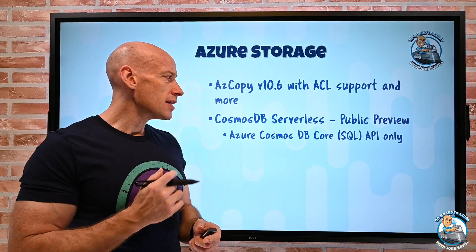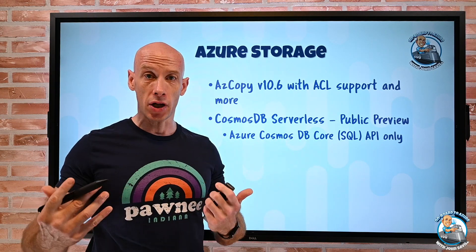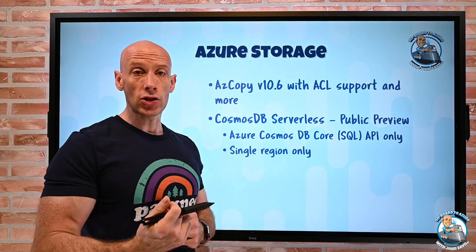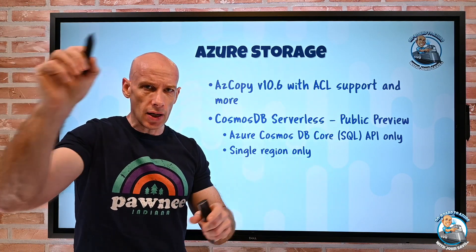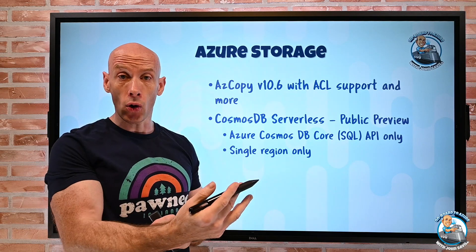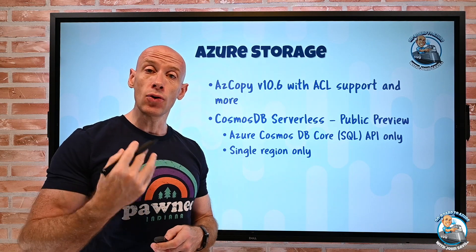Now this serverless option is only available for the Cosmos DB core SQL API, i.e. documents today. It's also only a single region. So ordinarily with Cosmos, I can say, I want this in all these different regions. I can kind of check boxes where I want this data. I can even do multiple write ordinarily. Today for this serverless, it's a single region.